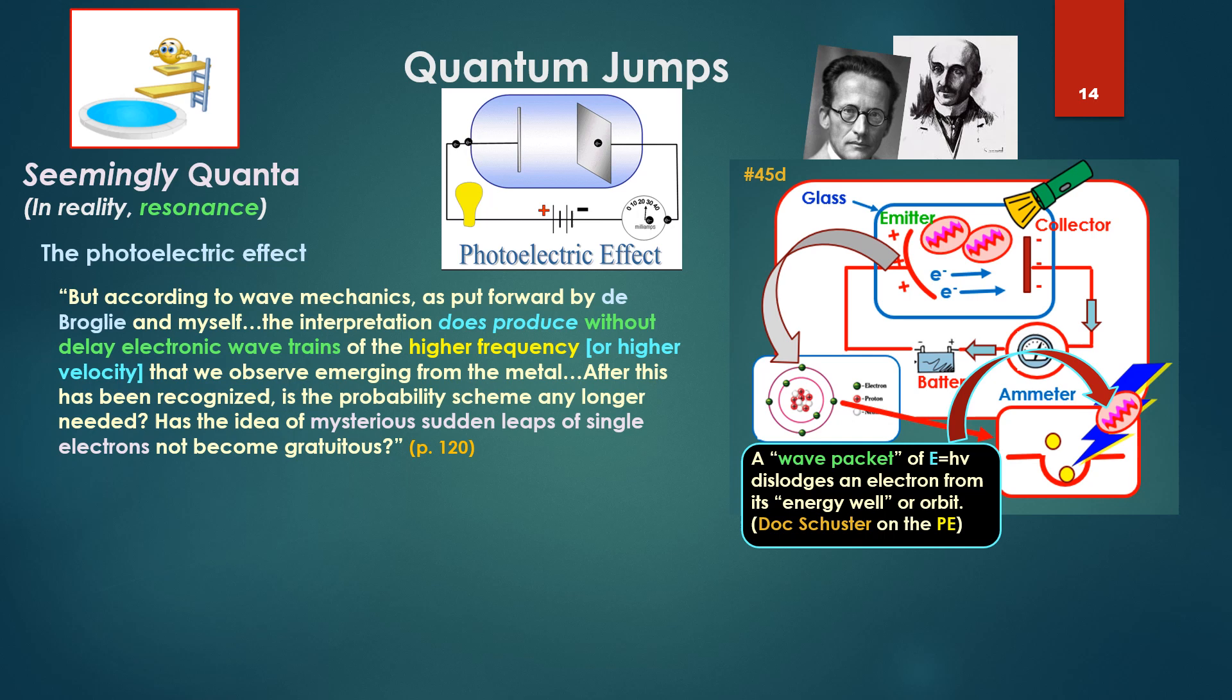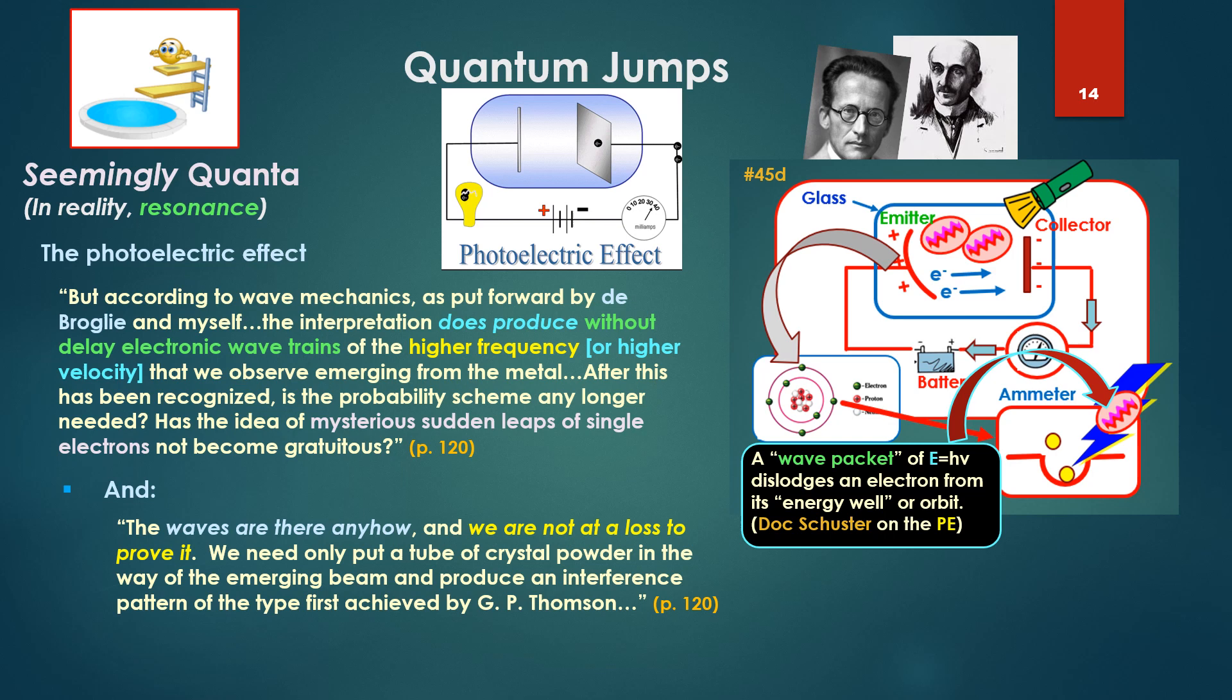But according to wave mechanics, as put forward by de Broglie and myself, the interpretation does produce without delay electronic wave trains of the higher frequency or higher velocity that we observe emerging from the metal. After this has been recognized, is the probability scheme any longer needed? Has the idea of mysterious sudden leaps of single electrons not become gratuitous? And the waves are there anyhow, and we are not at a loss to prove it. We only need to put a tube of crystal powder in the way of the emerging beam, in the way of those emerging little electrons from the plate, and produce an interference pattern of the type first achieved by GP Thompson. Those are not just little electron packets, they're waves, and we can prove it. End of story.